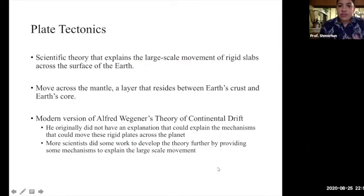As I said earlier, plate tectonics is a scientific theory that explains the large scale movement, the very slow, but over millions, hundreds of millions of years, the movement of these rigid slabs across the surface of the earth. How do you think we get all these mountains, the Himalayas, the Appalachian range, the Rocky Mountains?